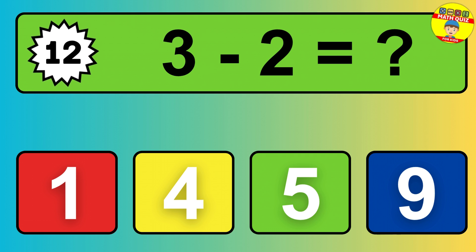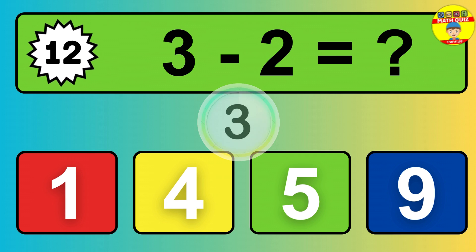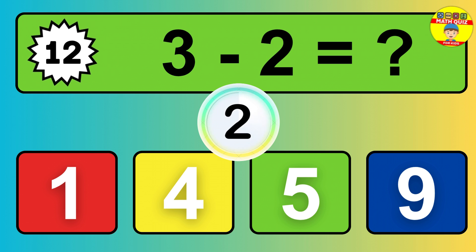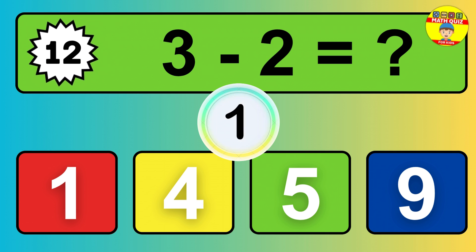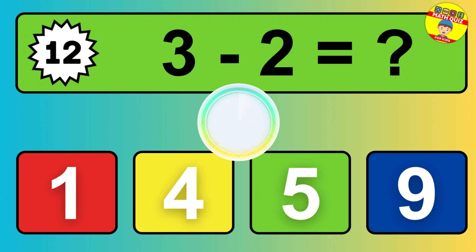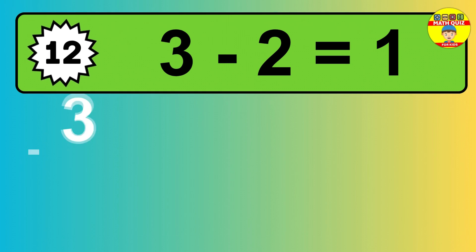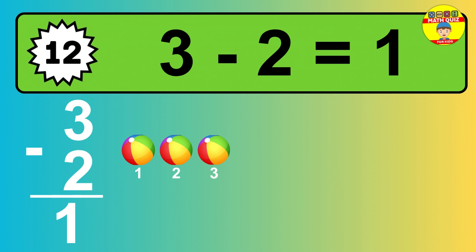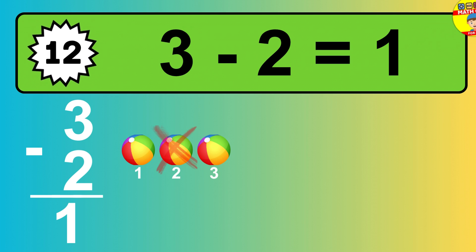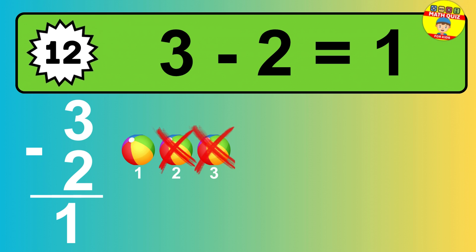Question twelve: three minus two equals what? So the answer is, three minus two is one. Let's count it. One.